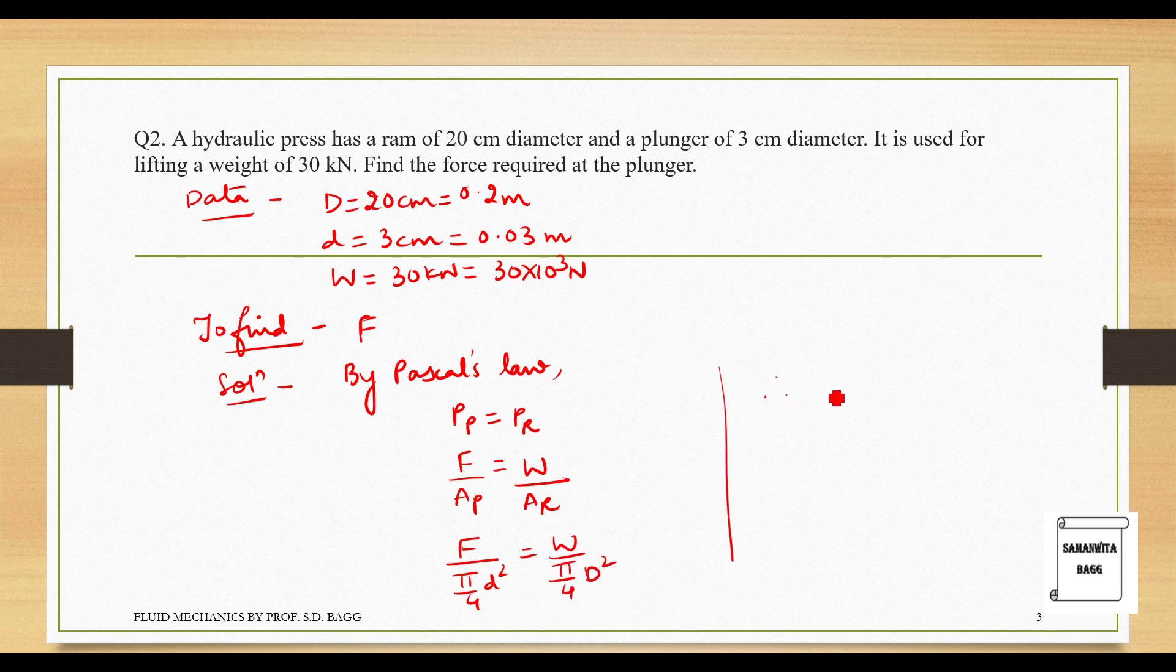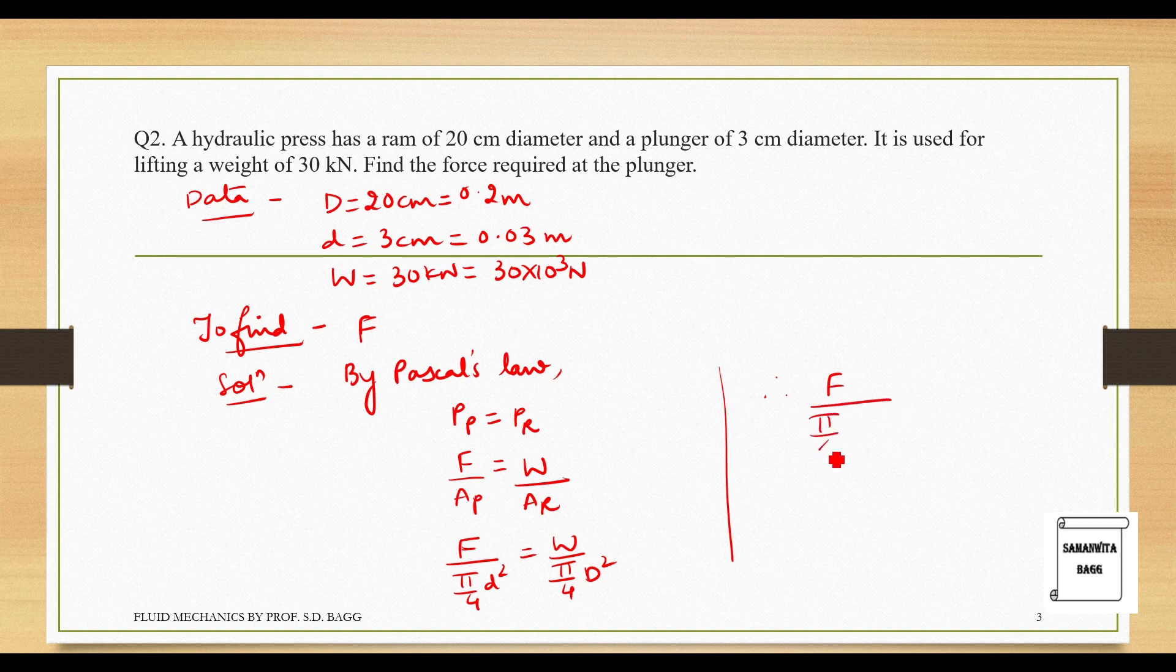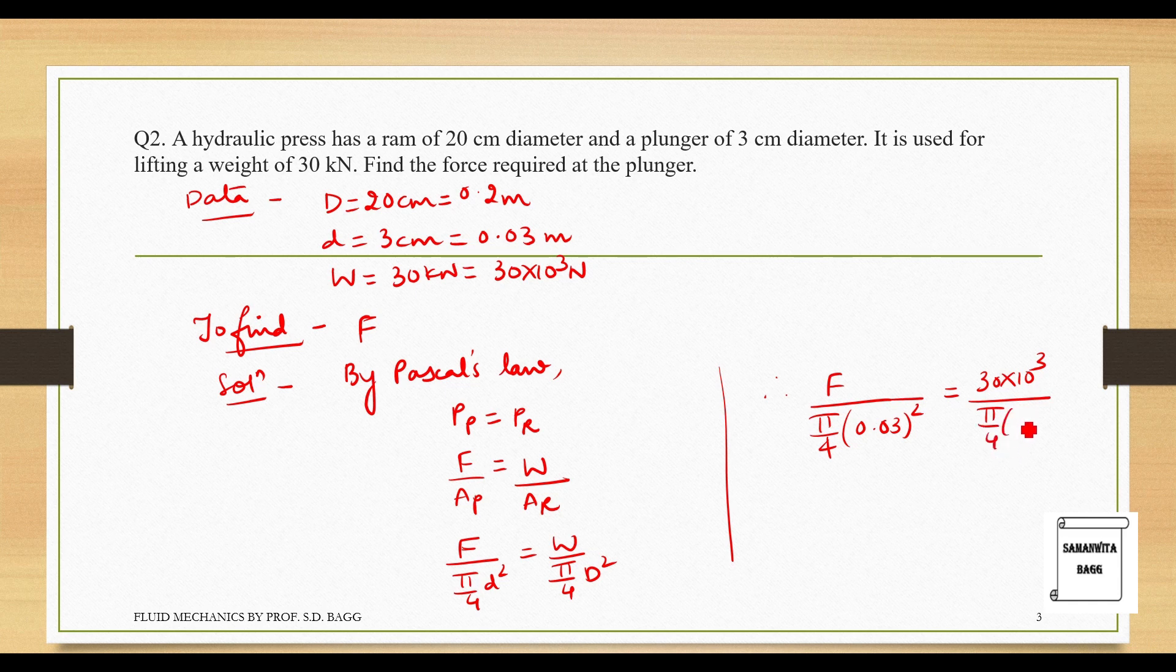When you substitute, F is unknown, π by 4 small d 0.03 square is equal to W is 30 into 10 raised to 3 N upon π by 4 0.2 whole square. When you solve this, you get the value of force as 675.2 N.